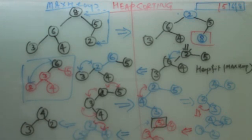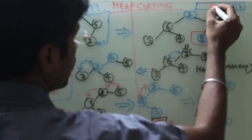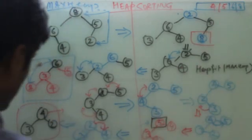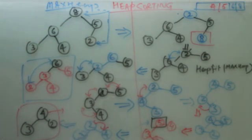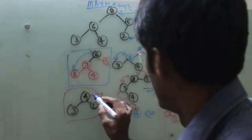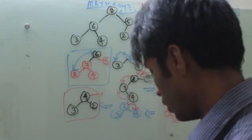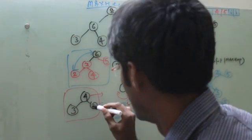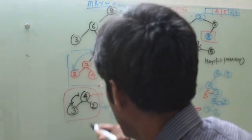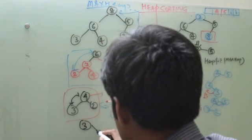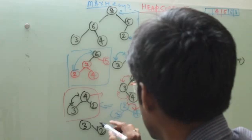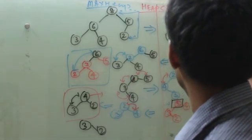So once we swap this, 4 is the new maxheap. So we will take out 4 and the new tree will become 3 and 2. So 3 will go here, 2 will go here.